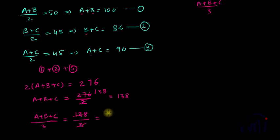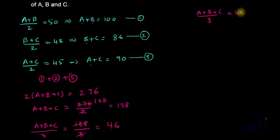This will be equal to 3, 4s are 12, and 3, 6 are 18. So the average of A, B and C will be equal to 46.